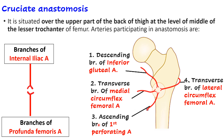Also participating is the ascending branch of the first perforating artery, which is again a branch of the profunda femoris. In each anastomosis — both trochanteric and cruciate — four arteries are anastomosing. It is called 'cruciate' because the participating arteries form a cross-like structure.